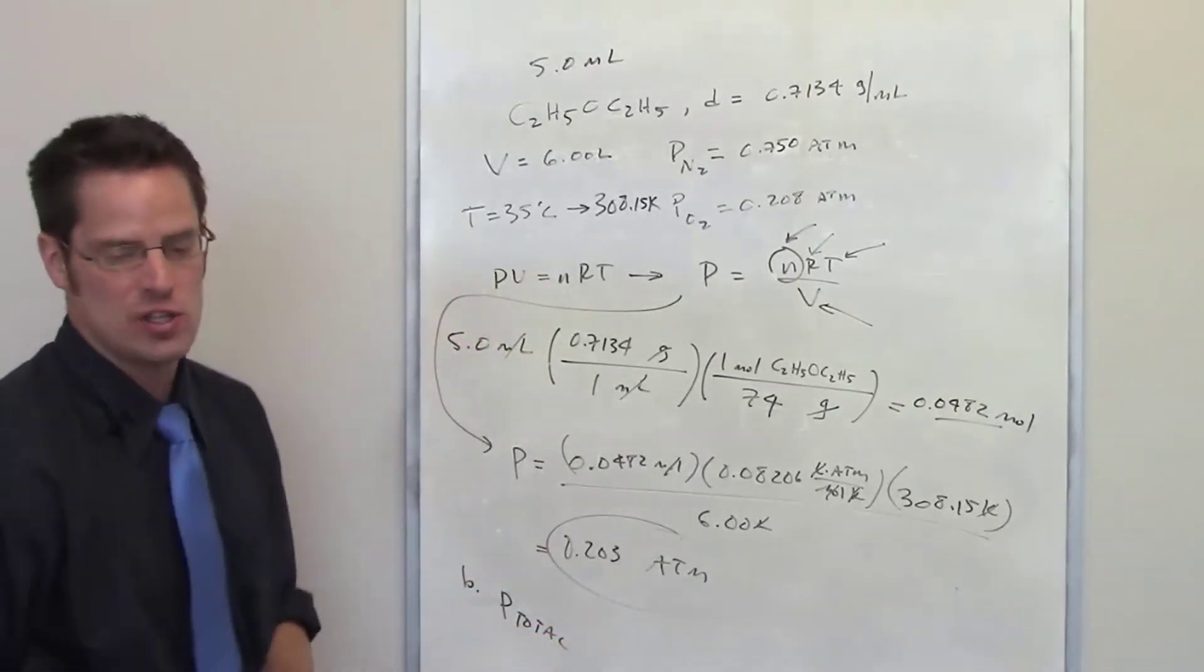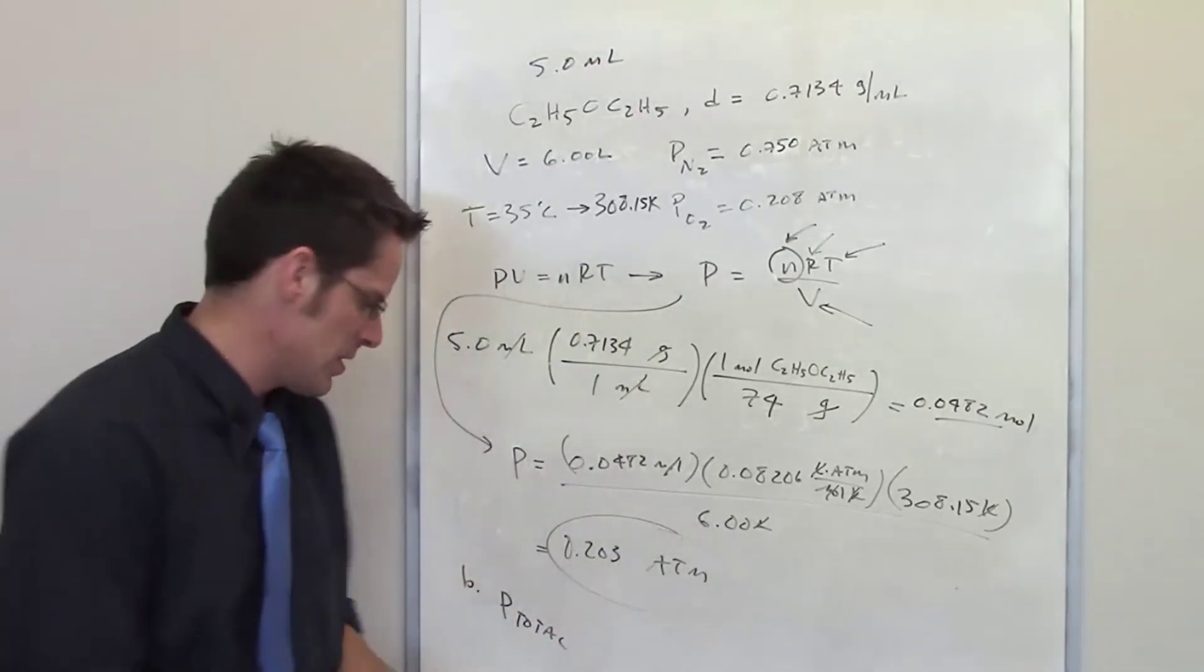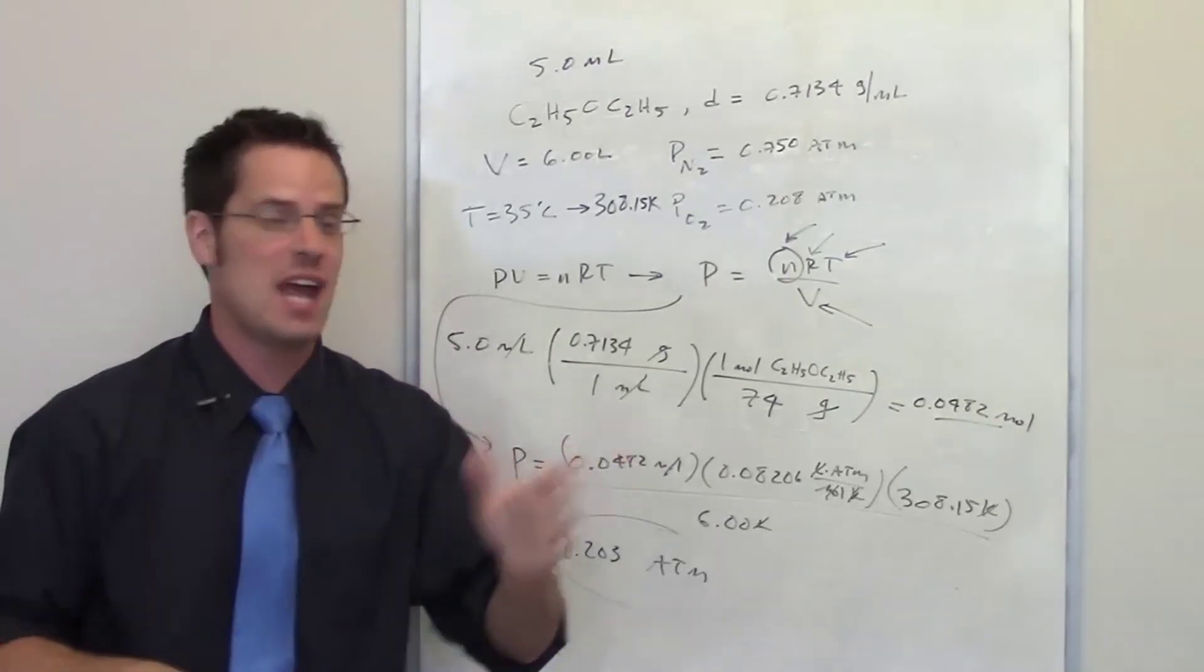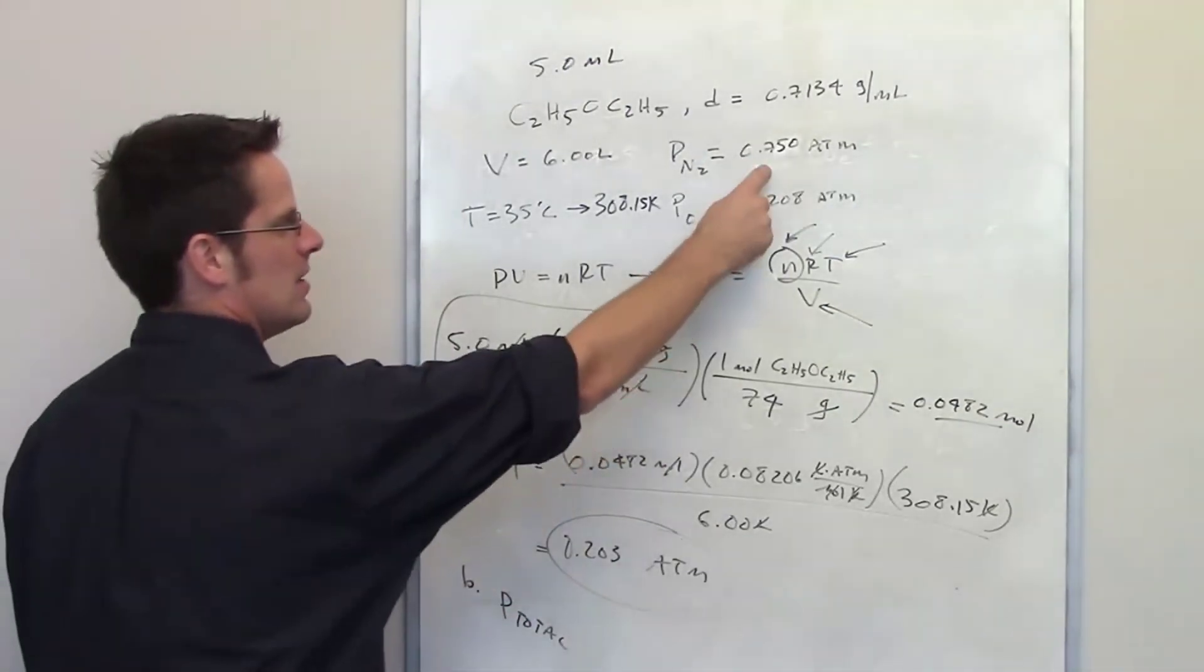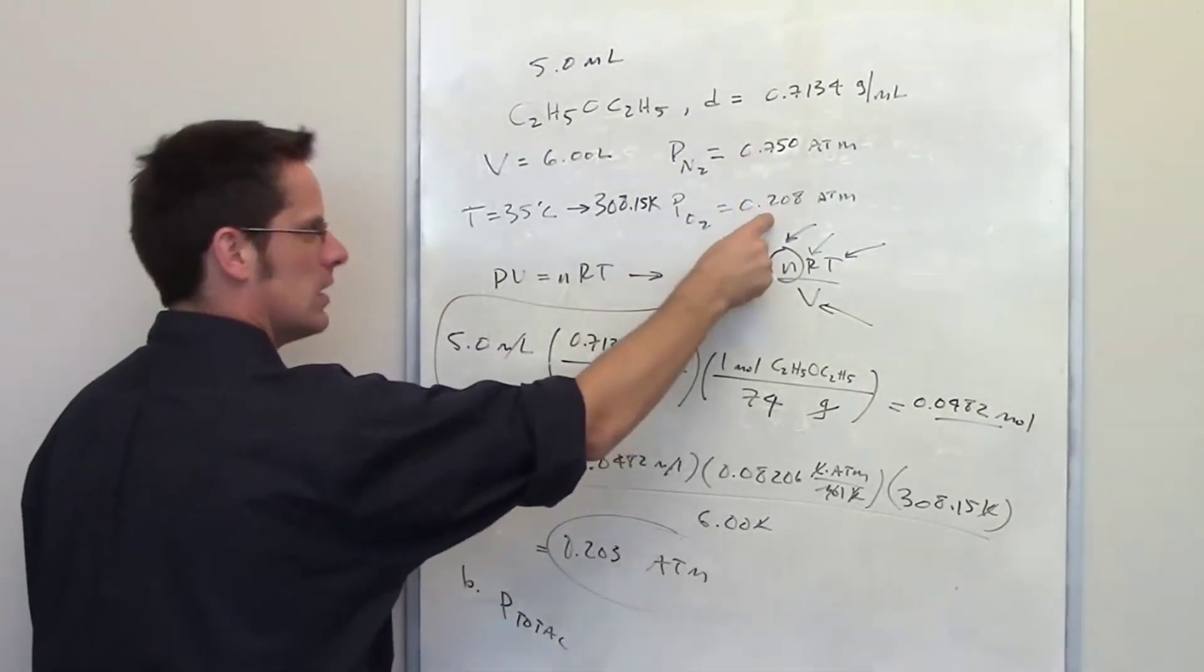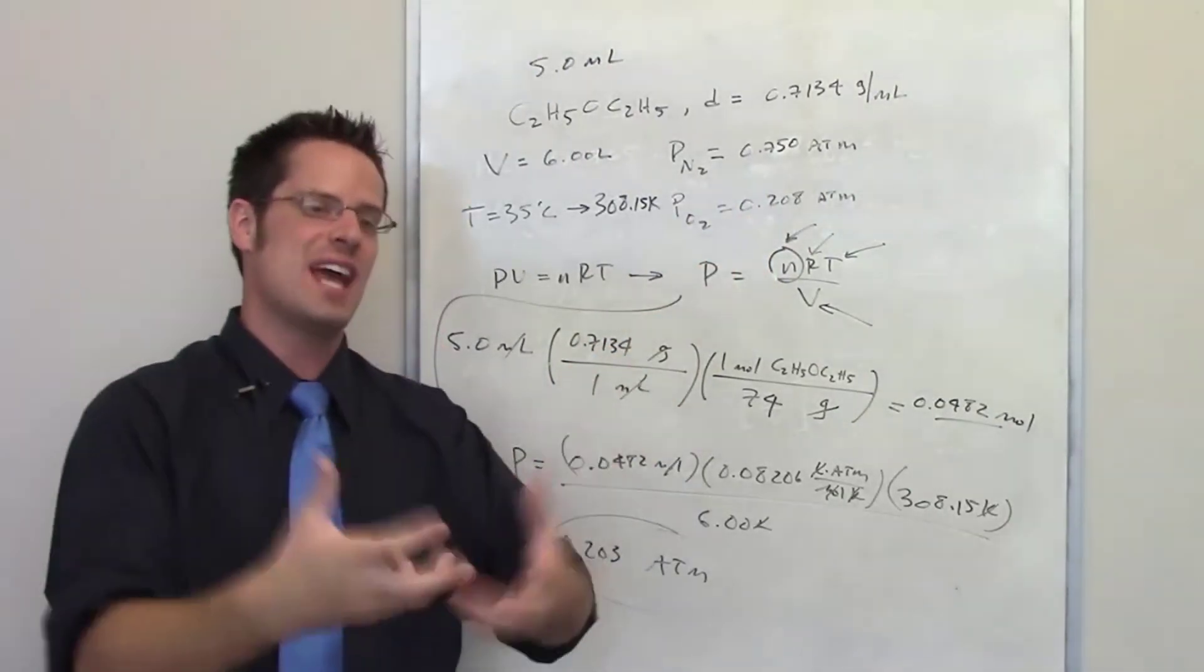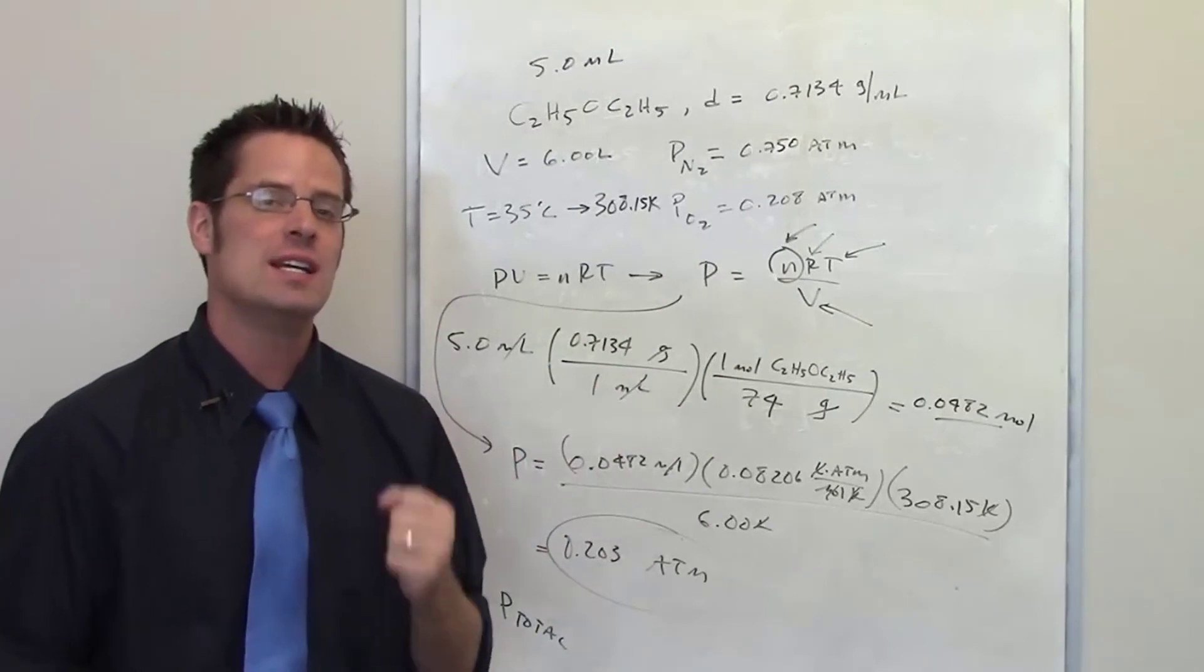Now according to Dalton's law the total pressure of a chamber that has multiple gases in it is equal to the individual pressures of each gas added together. So all I have to do is add the pressure of the nitrogen, the pressure of the oxygen, and the pressure of the diethyl ether all together and that will give me the total pressure of the system.